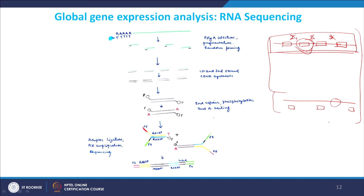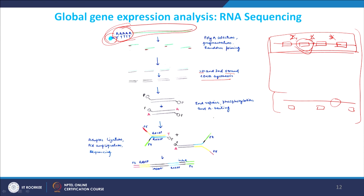If you look at how RNA sequencing functions: you extract total messenger RNA and specifically remove messenger RNA from the total RNA. Messenger RNA has a poly-A tail at the 3-prime end, and you can use oligo-dT tagged with some kind of beads to specifically pull out messenger RNA from the total RNA population. Then you use this RNA, do fractionation to make small RNA fragments, and use random primers — small 6-nucleotide single-nucleotide primers with different sequences — which randomly bind different places. Then you perform first strand and second strand cDNA synthesis, generating small double-stranded cDNA fragments.